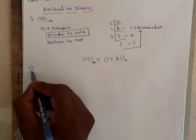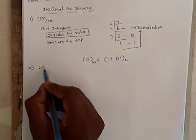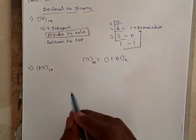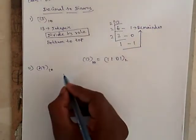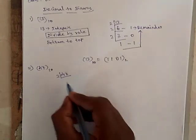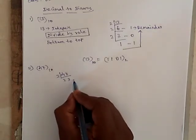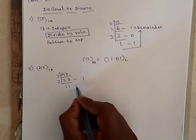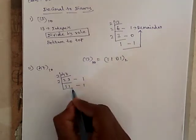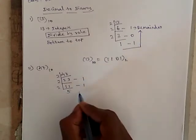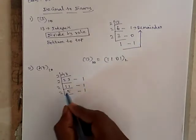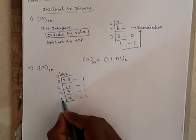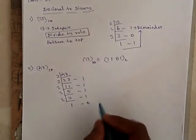Next, take 47. You have to convert this 47 into a binary number. So, 47 divided by 2, 23, remainder 1. So, divided by 2, 11, remainder 1. 2, 5, remainder 1. 2, 5, divided by 2, 2, remainder 1. 2, 1, remainder 0.